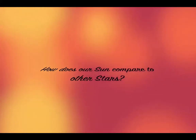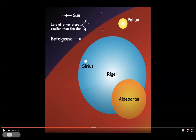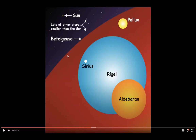How does the sun compare to other stars? Looking at this diagram, here's our sun, with lots of other smaller stars. But then look at these huge stars: Pollux, Sirius, Rigel in Orion, Aldebaran, and Betelgeuse. Betelgeuse is a super big star compared to all the others. The sun is not the largest star — it only looks large because it's the closest to us. There are many other stars thousands of times larger than our sun.